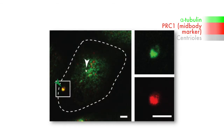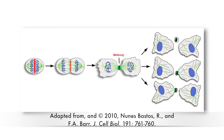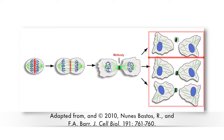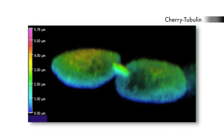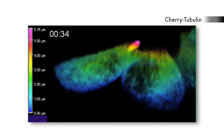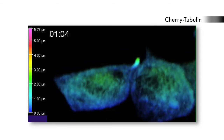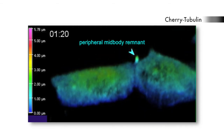Bernabé-Rubio et al. realised that these tubulin-rich structures were the remnants of mid-bodies — bundles of anti-parallel microtubules that form during cytokinesis in the middle of the intercellular bridge between daughter cells. Depending on where the bridge is cleaved at the end of cytokinesis, the mid-body can be shed into the extracellular environment or inherited by one of the daughter cells. What they observed was that after severing of the intercellular bridge, the mid-body was retained as a remnant by one of the daughter cells and becomes located at the apical surface close to the cell junction.